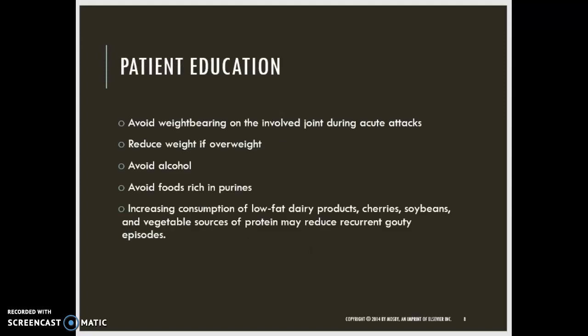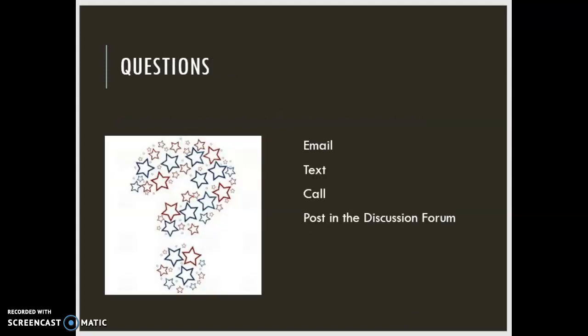Patient education will include avoiding weight-bearing on the involved joint during acute attacks, reducing weight if overweight, avoiding alcohol and foods that are rich in purines, and increasing consumption of low-fat dairy products, cherries, soybeans, and vegetable sources of protein, because those can greatly reduce recurrent gouty episodes. As always, if you have questions, you know how to reach me. See you soon!